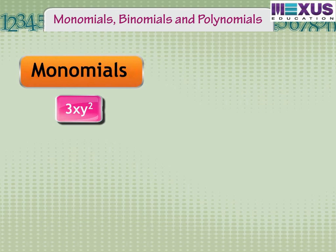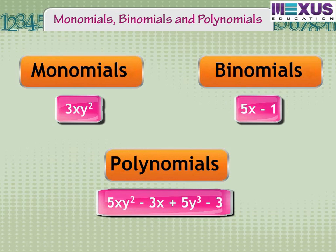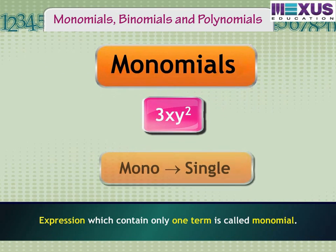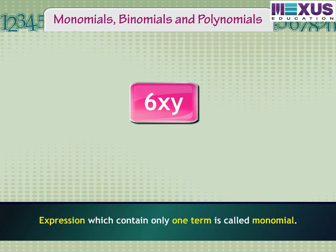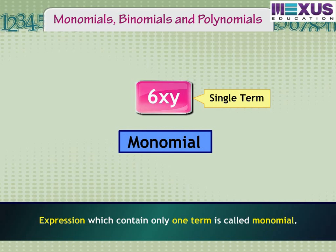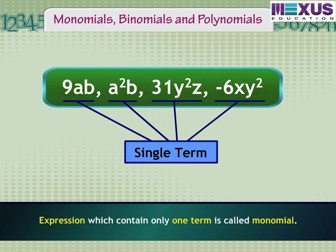Let us now understand monomials, binomials, and polynomials. An expression which contains only one term is called a monomial. Mono means single, referring to a single term. For example, 6xy has only one term, so it is known as a monomial. Some more examples are 9ab, a squared b, and 31y squared z — these are all monomials as they have only one term.